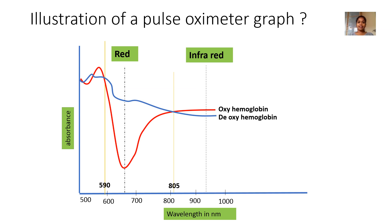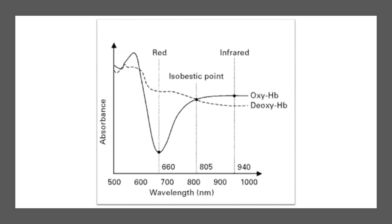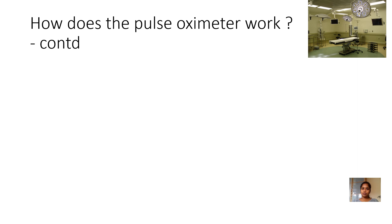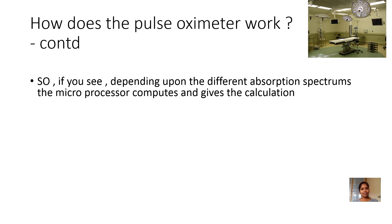Oxyhemoglobin has a low absorbance at red and high absorbance at infrared — this is the curve of oxyhemoglobin shown here. Similarly, deoxyhemoglobin has a high absorption at red and low absorption at infrared. This is the original picture of the pulse oximeter graph; it is an ideal reference. The pulse oximeter works with the Beer-Lambert law and these different absorption spectra.